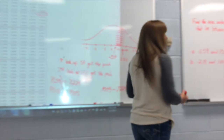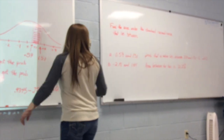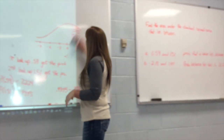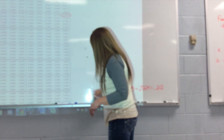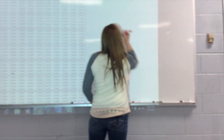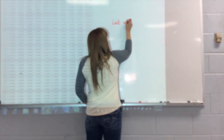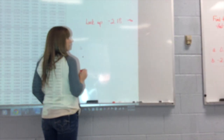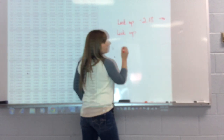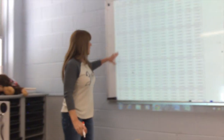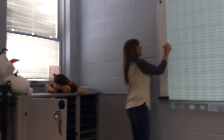Let me do another example. This time we'll do it with a negative z-score. I'm going to have to use the positive part of the table. I'll look up the negative value and also look up 1.44. Since I have the positive table up already, I'm going to look up 1.44 — going over to the column where 0.04 is along that row.